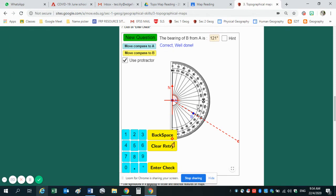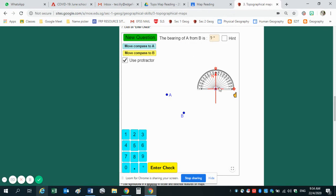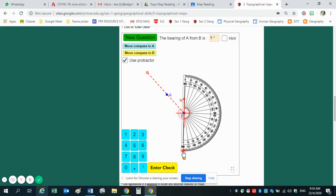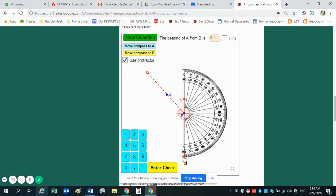So it's 121 degrees. Now click on next question. The question is A from B now. It's not B from A, but A from B. So you have to move your protractor to B and of course join the two points with a straight line. Tilt your protractor. Now you can see it's a very different story.